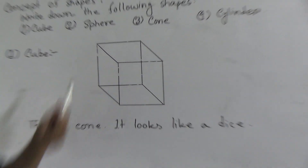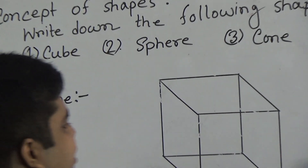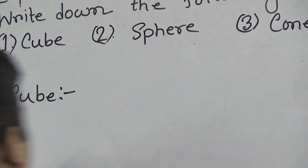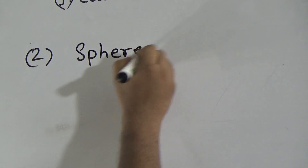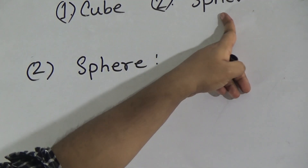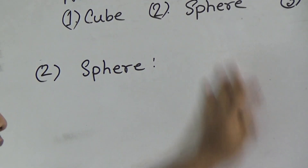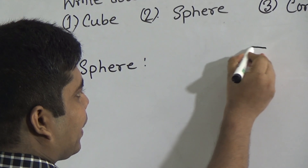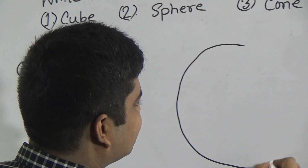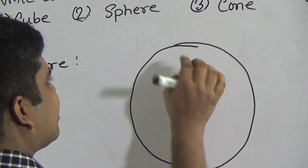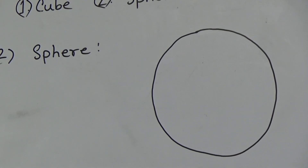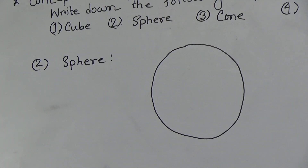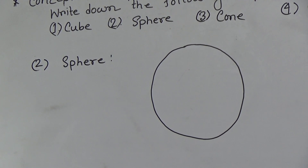Next we shall learn question number two: sphere. Shape number two is sphere — S-P-H-E-R-E. How to draw a sphere? At first we draw a circle. My dear students, I draw it freehand, but you can use a bangle or any other round-shaped thing to draw a circle.